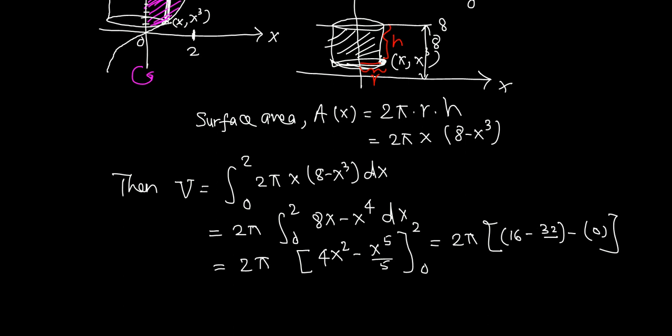So 2 pi times (16 minus 32/5). 16 is 80/5, 80/5 minus 32/5, so 80 minus 32 is 48, 48/5. 2 pi times 48/5 is 96π/5 cubic units, final answer.